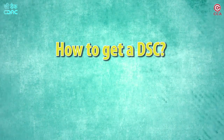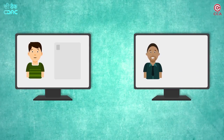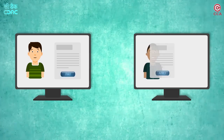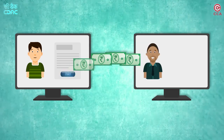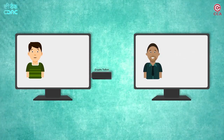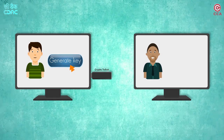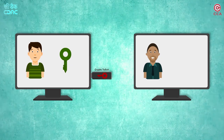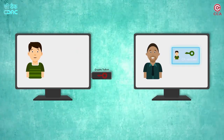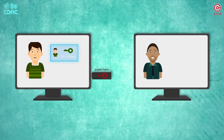How to get a DSC? Apply online to any of the CAs of your choice. Fill the form and submit the required proof. Make the payment. Upon successful verification, a crypto token will be issued to you. The private key is protected inside the crypto token with a PIN. Use the crypto token to generate a pair of keys and send the public key to the CA for getting a digital signature certificate. The CA then issues the DSC, after which your digital signature gains legal sanctity.